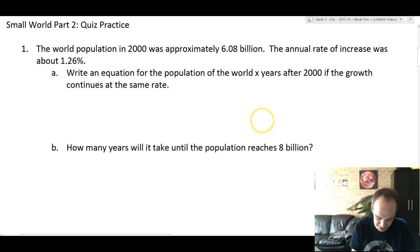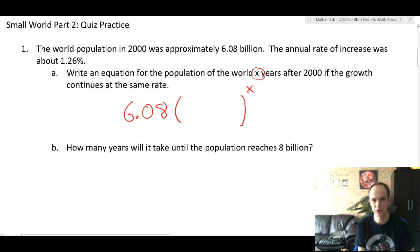The world population in 2000 was 6.08 billion. The annual rate of increase was 1.26%. Write an equation for the population of the world after x years after 2000. So the starting amount is 6.08 billion. I'm just gonna leave it as 6.08 and know that our answer is in billions. And I need to multiply by something to the x. This is exponential growth. That means the x is gonna be in the power. That's how you model repeated percent growth.